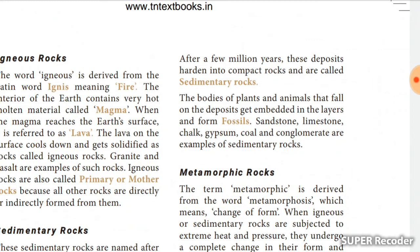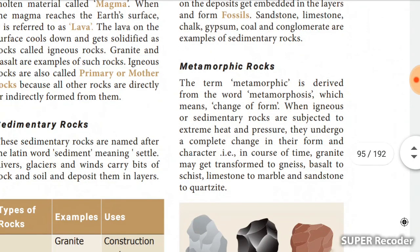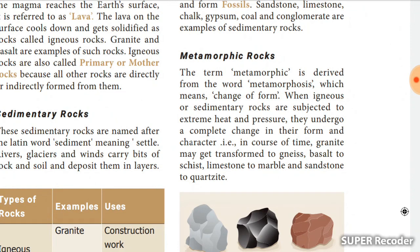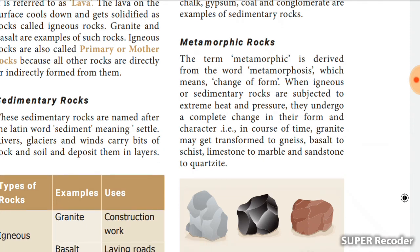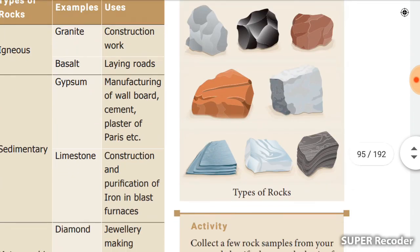Sandstone, limestone, chalk, gypsum, and coal are examples of sedimentary rocks. Metamorphic rocks — the term 'metamorphic' is derived from a word meaning 'change of form.' When igneous or sedimentary rocks are subjected to extreme heat and pressure, they undergo a complete change in their form and character. For example, granite may be transformed to gneiss, and limestone to marble, and sandstone to quartzite.